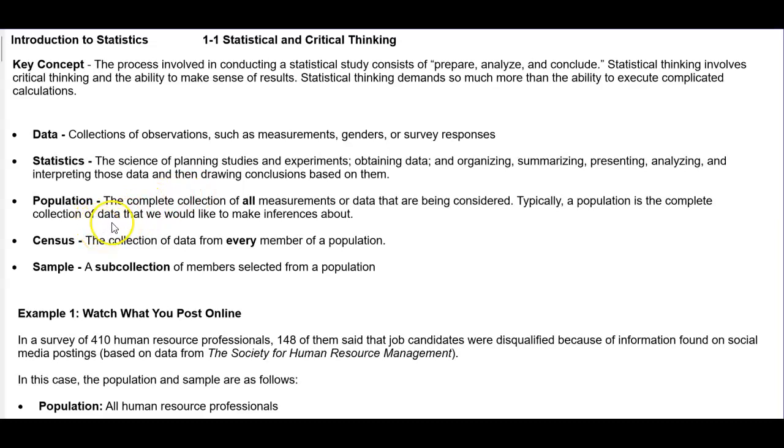Population is the complete collection of all measurements or data that are being considered. Typically, a population is the complete collection of data that we would like to make inferences about. Census is the collection of data from every member of a population. Sample is a subcollection of members selected from a population.